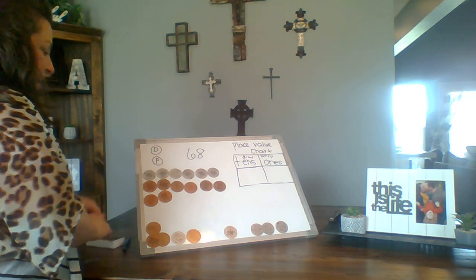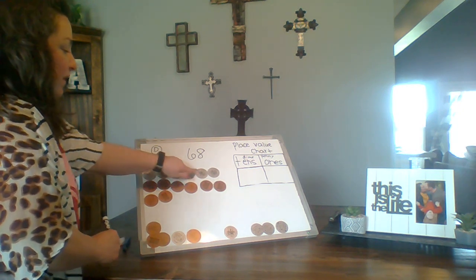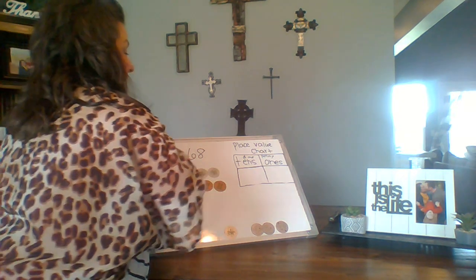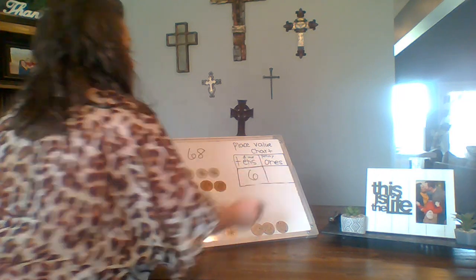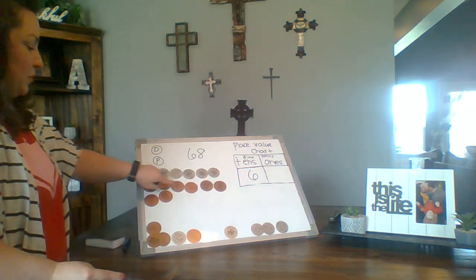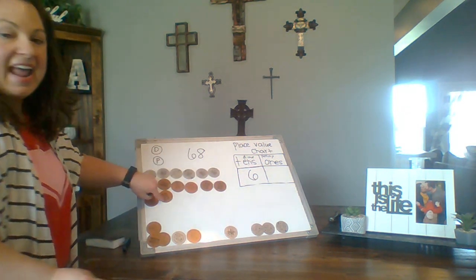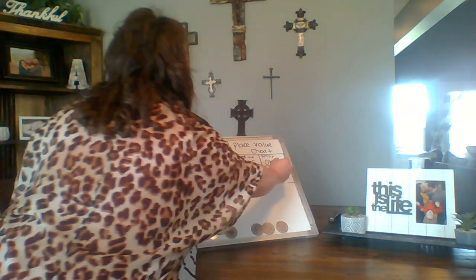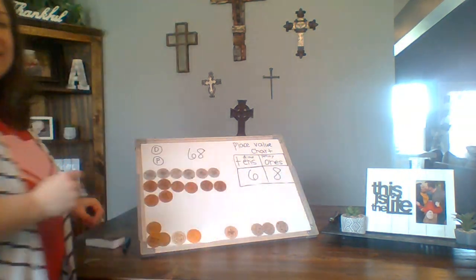So we have 1, 2, 3, 4, 5, 6 dimes — remember a dime is worth 10. And we have 1, 2, 3, 4, 5, 6, 7, 8 pennies — the penny is worth 1. That gives us the number 68.